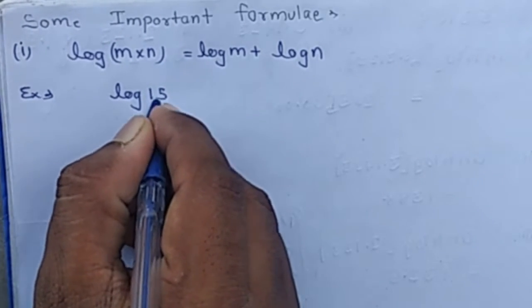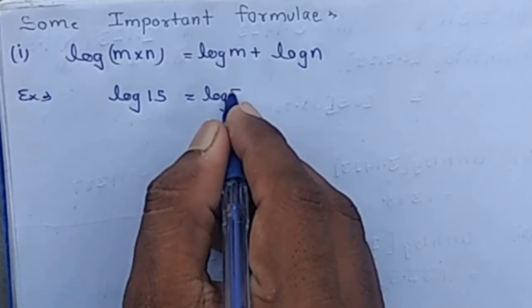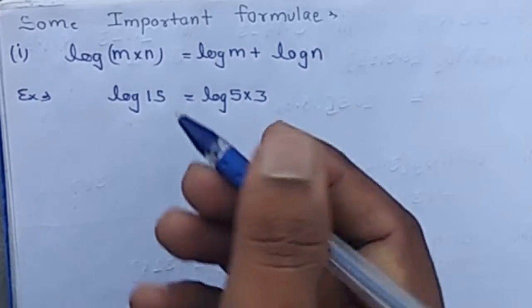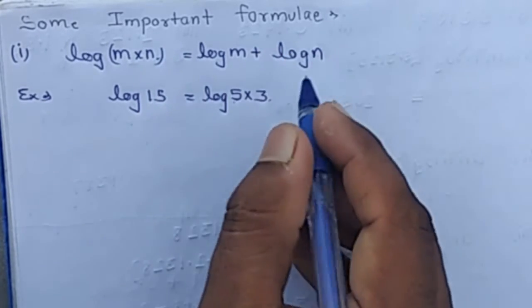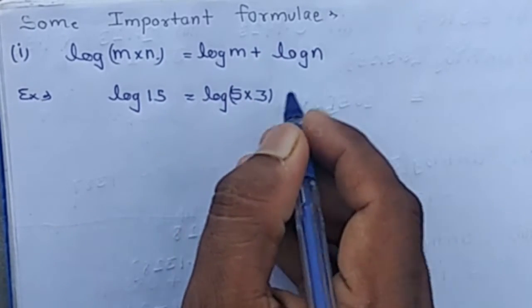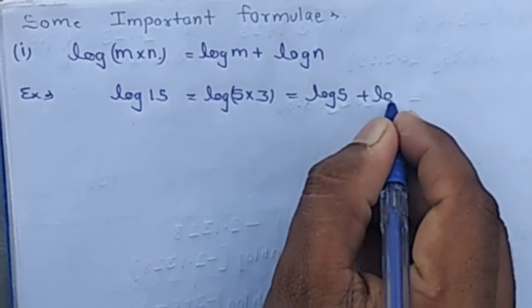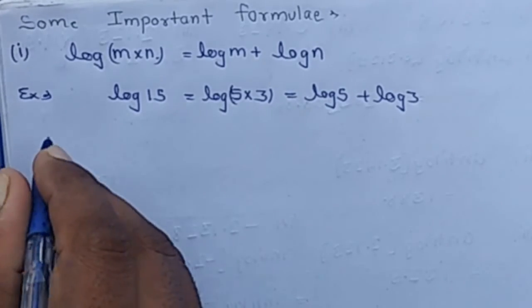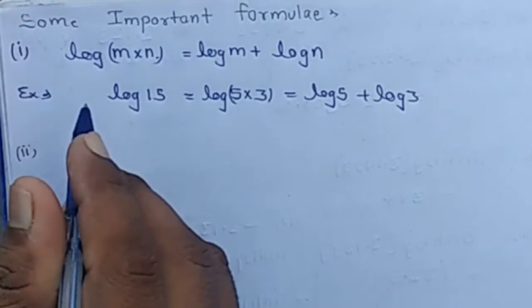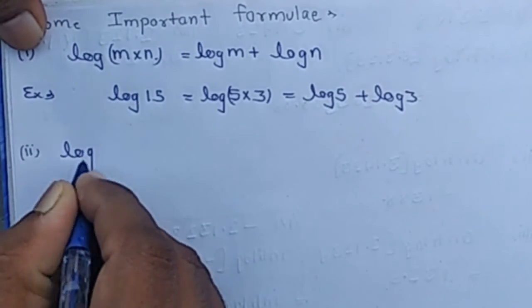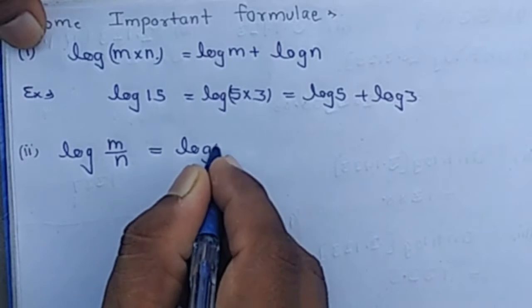...like log 15, then we can write 15 as the product of 5 and 3. It is log(m×n), and the formula for log(m×n) is log m + log n, so log(5×3) can be written as log 5 + log 3. Now the second formula is log(m/n) = log m...